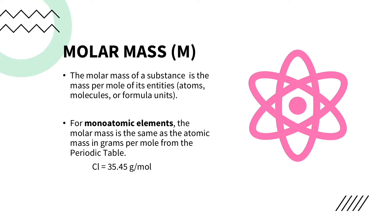For example, we have chlorine. In the periodic table, the atomic mass of chlorine is 35.45 amu, so the molar mass of chlorine is also 35.45 grams per mole. Another example would be barium, which has a molar mass of 137.33 grams per mole.